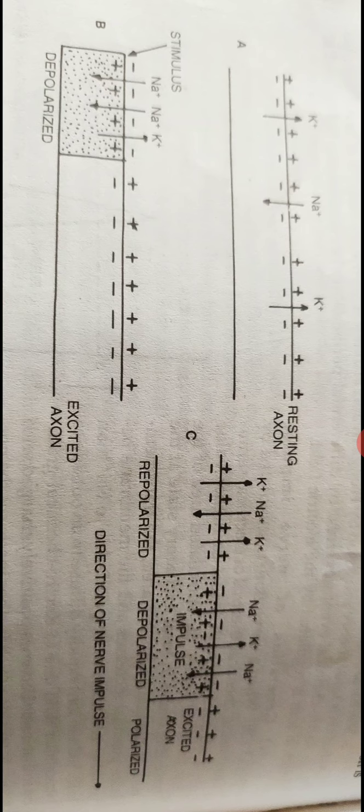It is electropositive inside while electronegative outside. It lasts for less than one-thousandth of a second, so a nerve fiber can conduct about one thousand impulses per second.